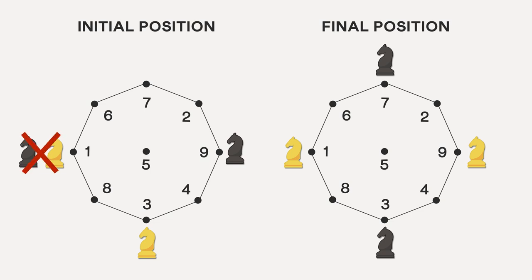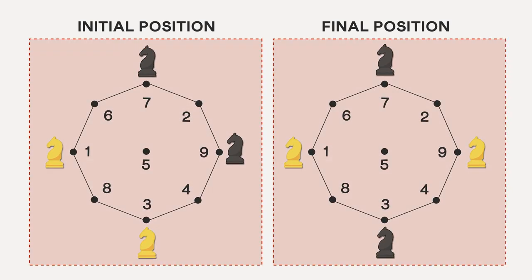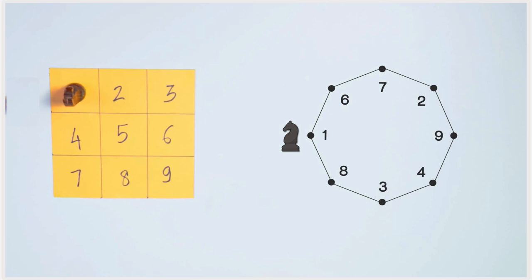Two knights cannot be on the same square on the grid at the same time. And therefore, going from the initial to the final state isn't possible. So we see how representing the problem visually instantly tells us that this knight's repositioning is simply impossible, however hard we try. And that's the power of mathematical thinking.